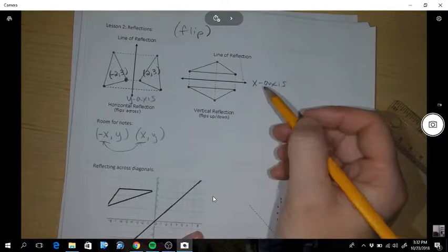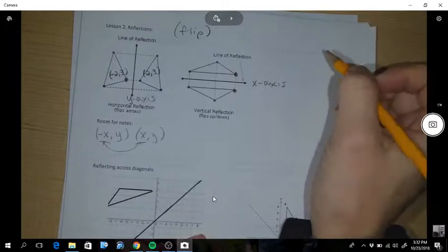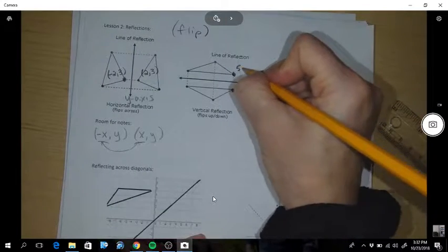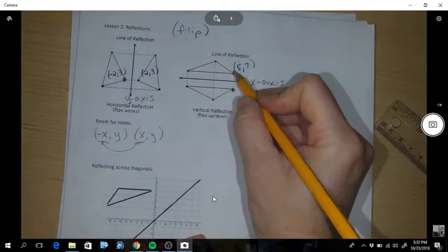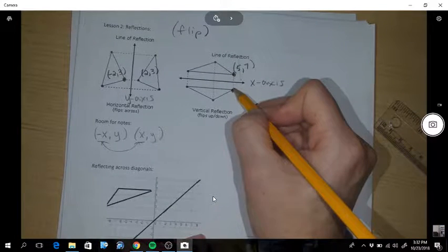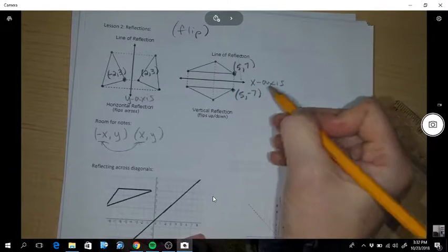Let's look at a reflection here. On a graph, let's pretend this is a 5, 7. Then what would change? I'm not changing my left-right movement, I'm changing up and down. So the new point would be 5, negative 7.